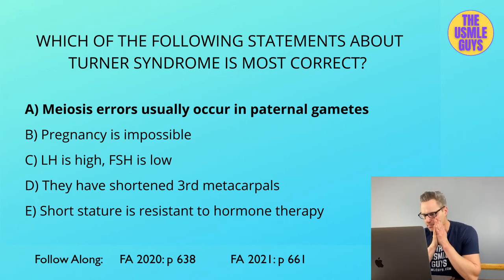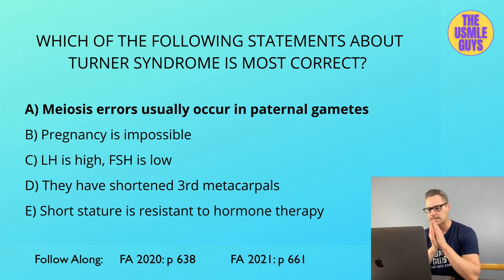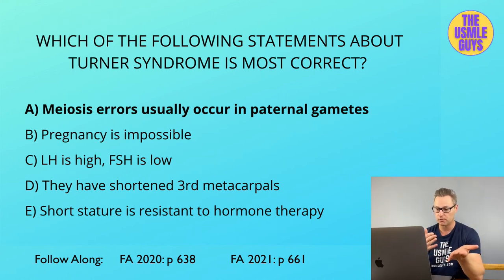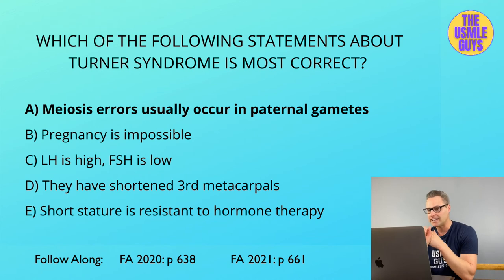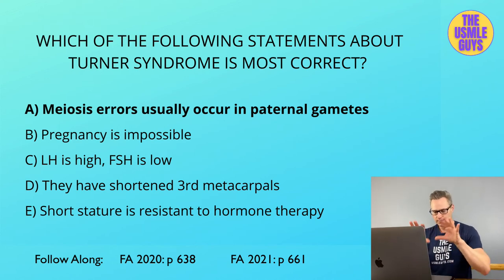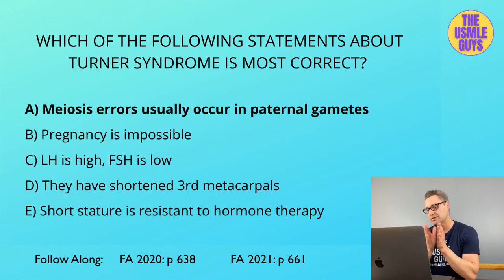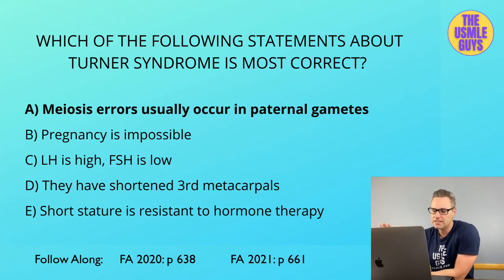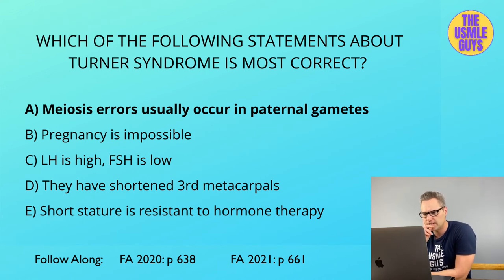Let's look at two other conditions: double Y males and ovotesticular disorder of sex development. Double Y males are 47XYY — don't confuse this with Klinefelter's 47XXY. These patients are tall, may have severe acne, learning difficulties, and are typically on the autism spectrum. Importantly, fertility is typically normal in double Y males, unlike Klinefelter. Ovotesticular DSD can be seen in both males and females; it features both testicular and ovarian tissue with ambiguous genitalia. Most energy should go toward Turner and Klinefelter syndrome.